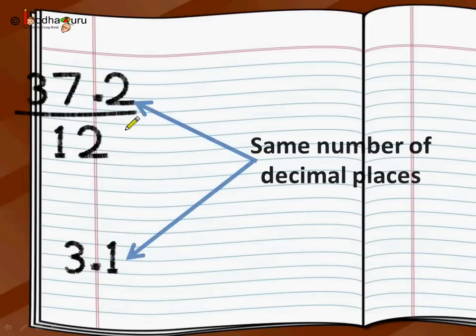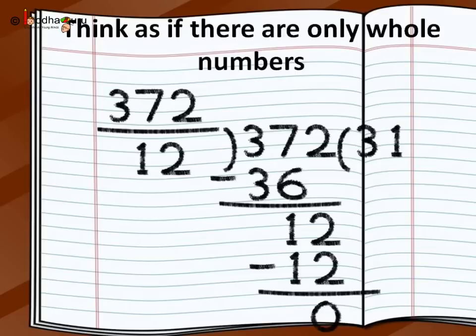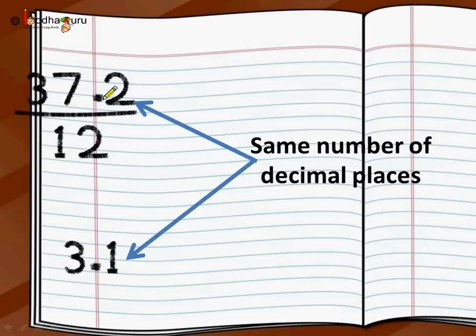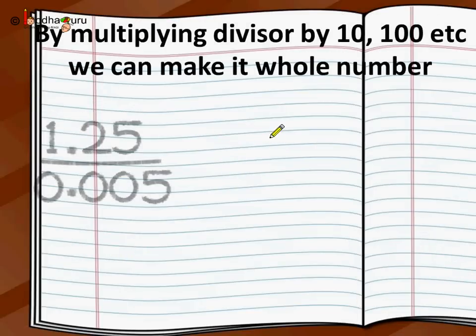We first multiplied both denominator and numerator by 10 so that the divisor becomes a whole number. We chose 10 because 1.2 had one decimal place, and multiplying by 10 made it 12. So 3.72 became 37.2 and 1.2 became 12. Then we did a simple division treating them as whole numbers — 372 divided by 12 gives 31 — and put the decimal point in the result at the same place as the dividend. By multiplying the divisor by 10, 100, or 1000 we can make it a whole number.